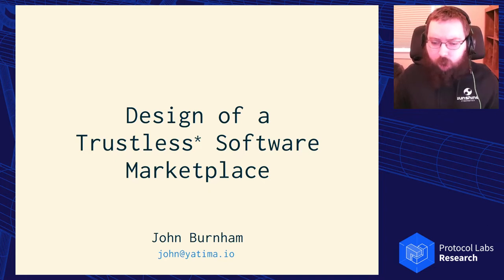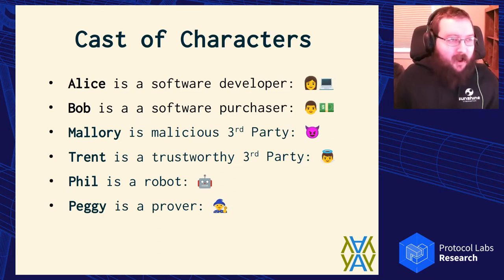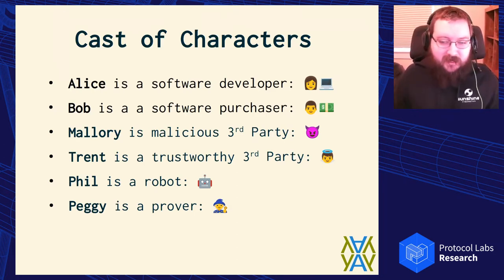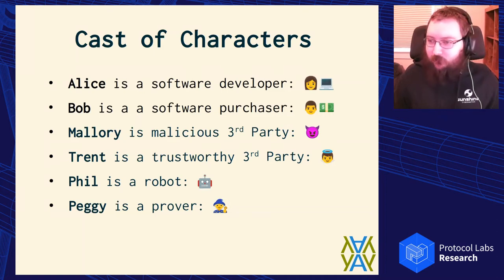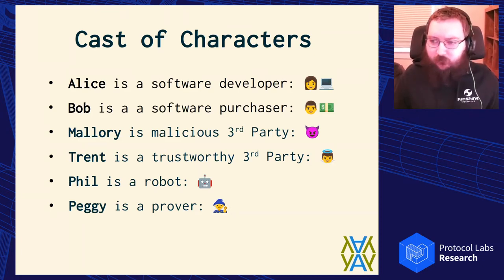As is traditional, I have a cast of characters — Alice and Bob, who some of you may have met in other contexts — along with a malicious third party, a trustworthy third party, Phil the robot, and Peggy the prover. I'm going to go through some diagrams, a little drama around what Alice and Bob might want to do when they're buying and selling software.